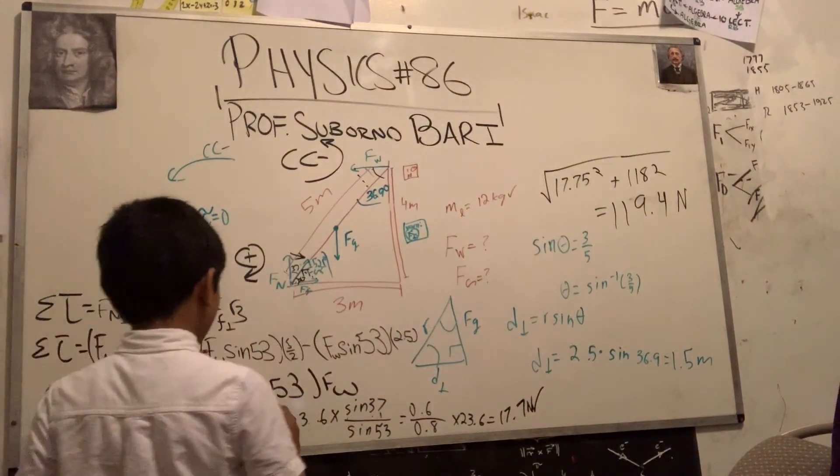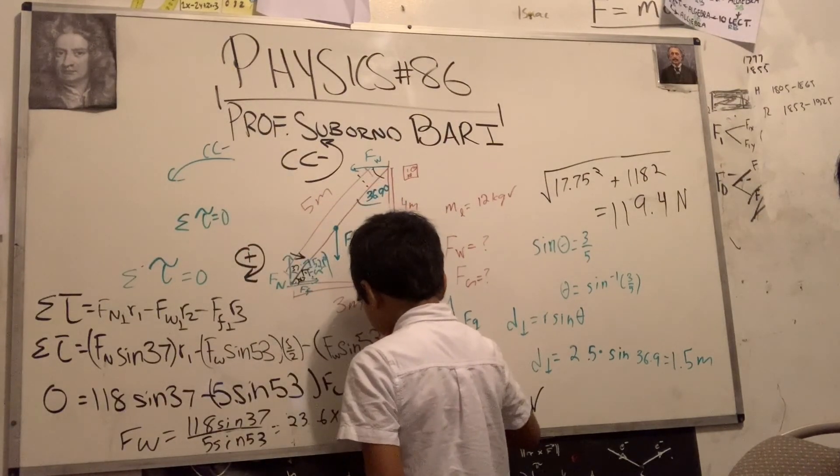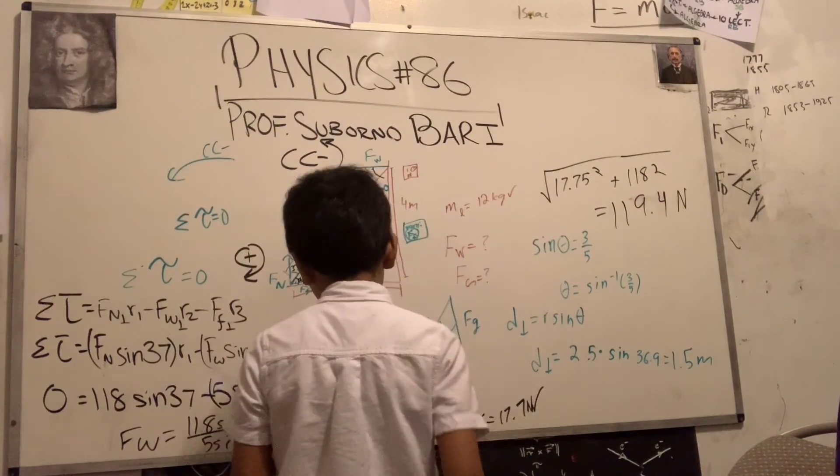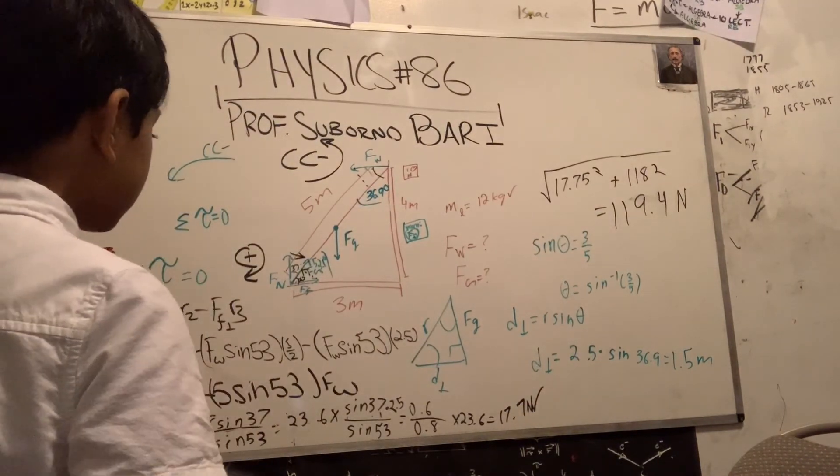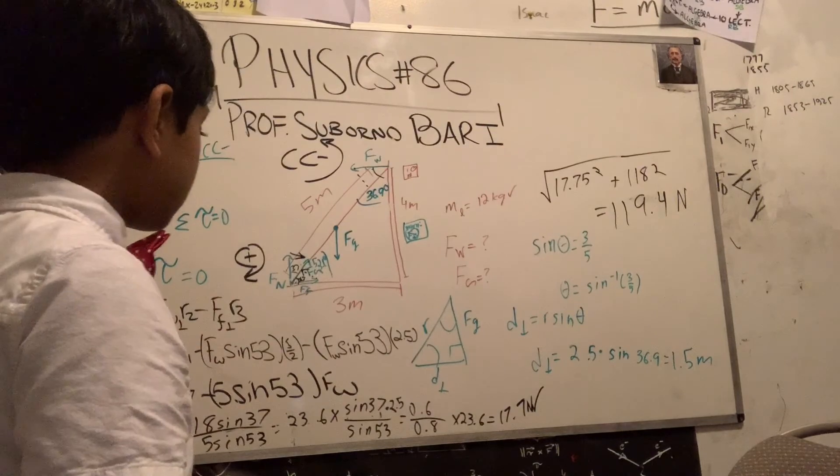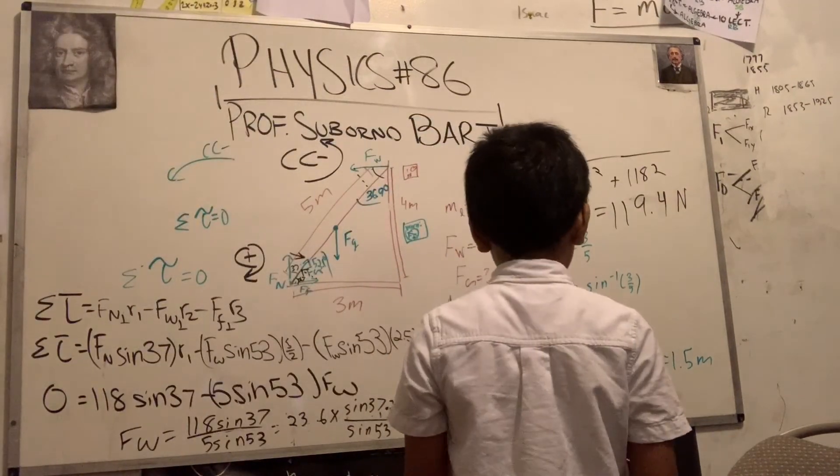We did not multiply that by 2.5. So 17.7 times 2.5 is going to give me 44.25. Yes! 17.7 times 2.5, that's what we were trying to acquire the whole time!